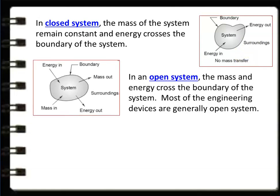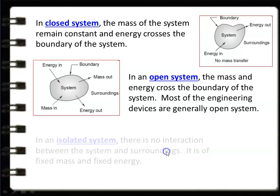In an open system, looking at the diagram: the system has a boundary and surrounding, and mass is entering and leaving — mass in, mass out, energy in, energy out. Both energy and mass cross the boundary of the system. Most engineering devices are open systems. Consider your IC engine, pressure cooker, turbine, or motorcycle — mass is entering and leaving, energy is entering and leaving. This is an open system.